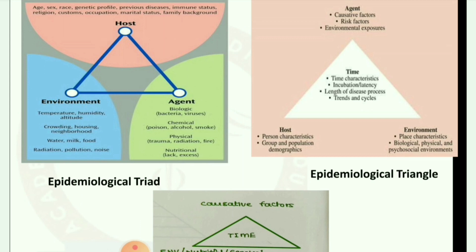In environment, it includes temperature, humidity, altitude, crowding, housing, neighborhood, water, milk, food, radiation, pollution, and noise. Agent includes biological agents like bacteria, viruses, parasites; chemical agents like poison, alcohol, smoke; physical agents like trauma, radiation, fire; and nutritional factors — either lack or excess.